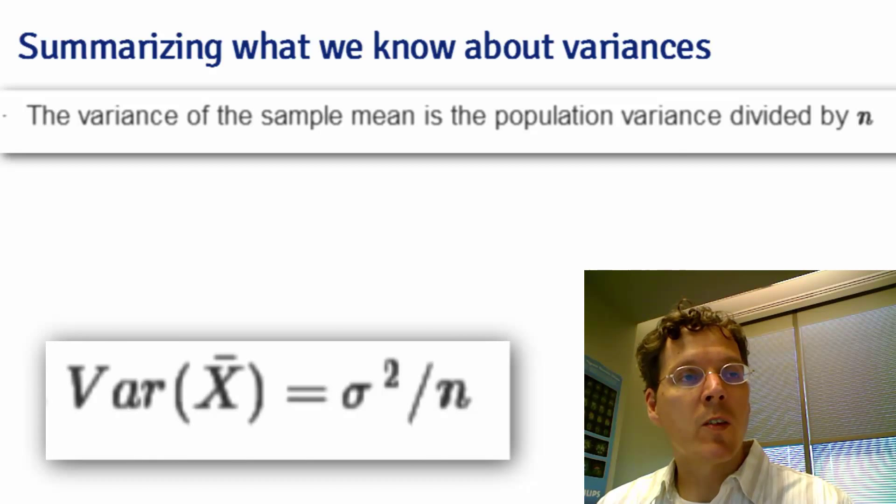And the square root of it, sigma divided by square root n, is the so-called standard error. These quantities represent how variable averages are drawn from this population.